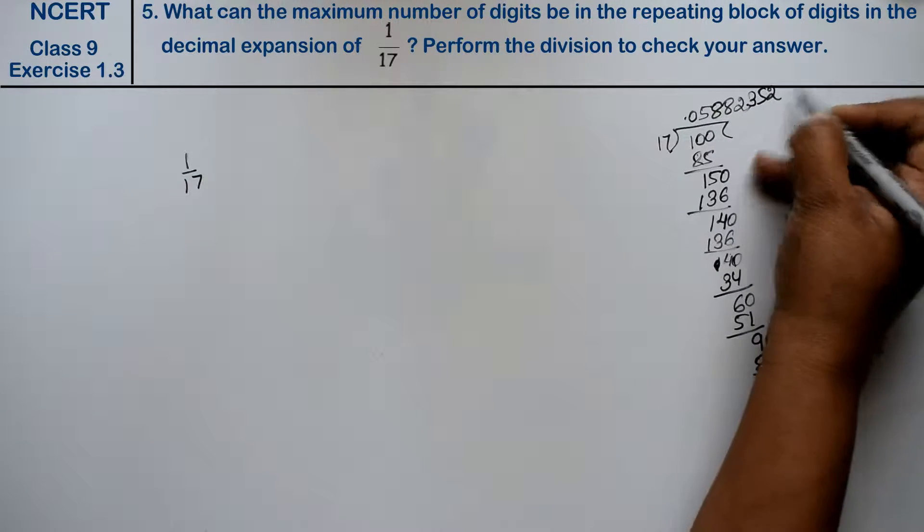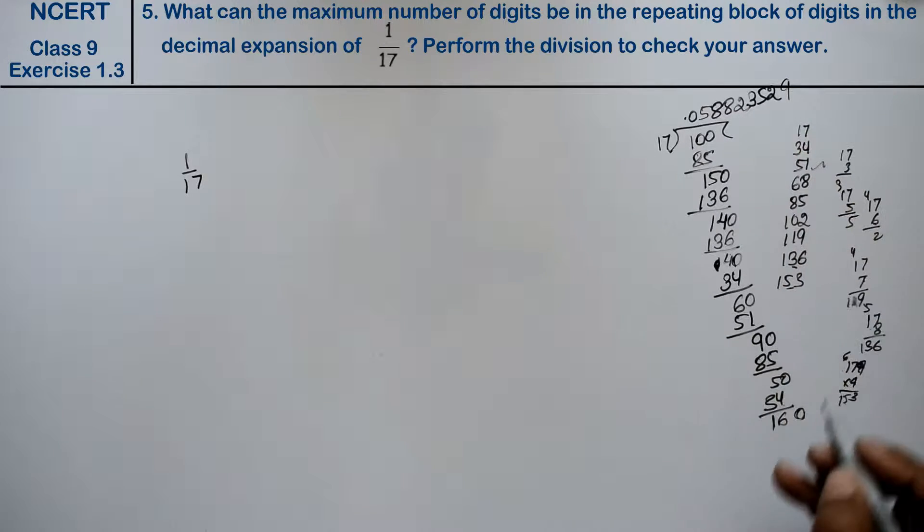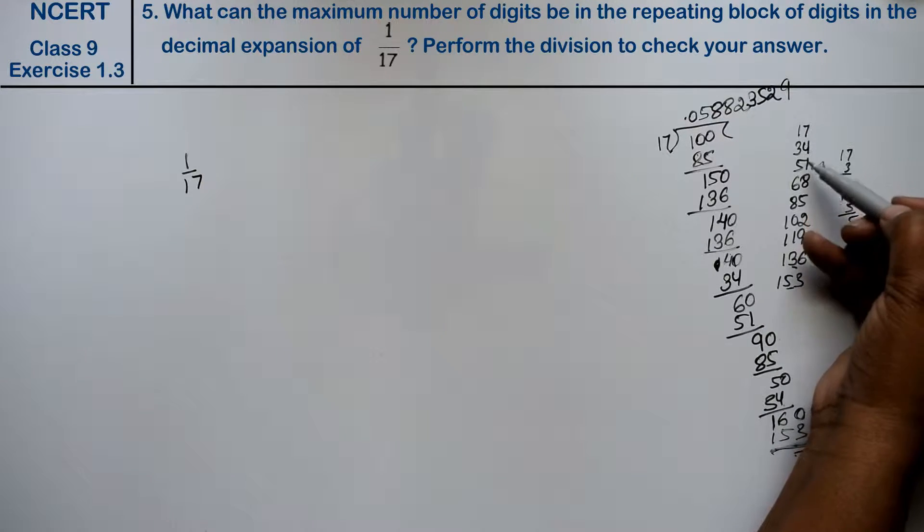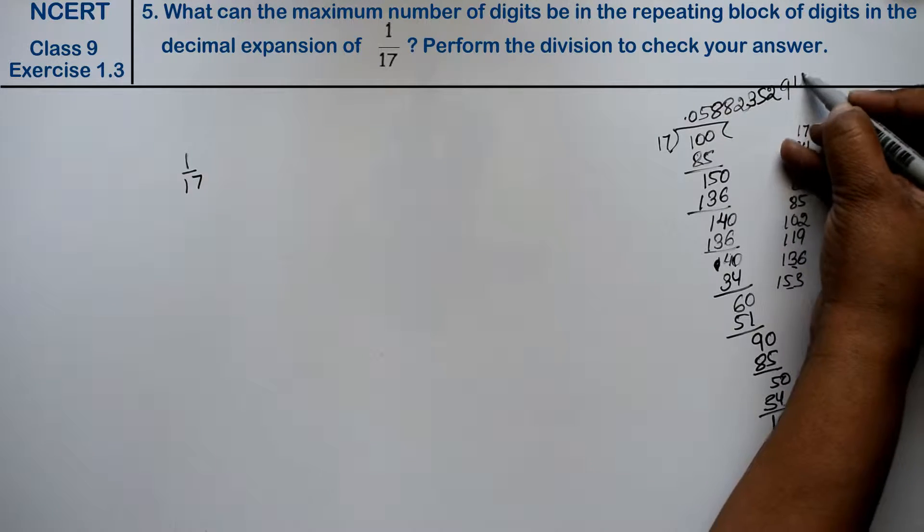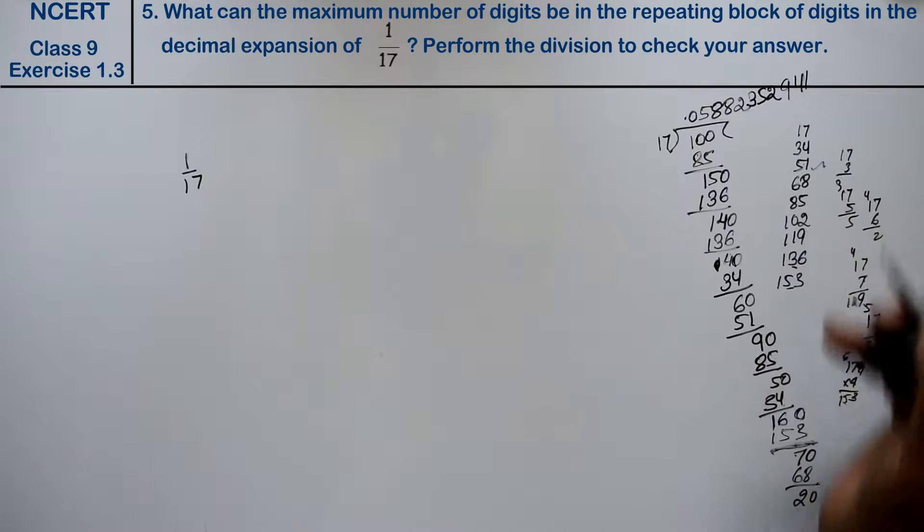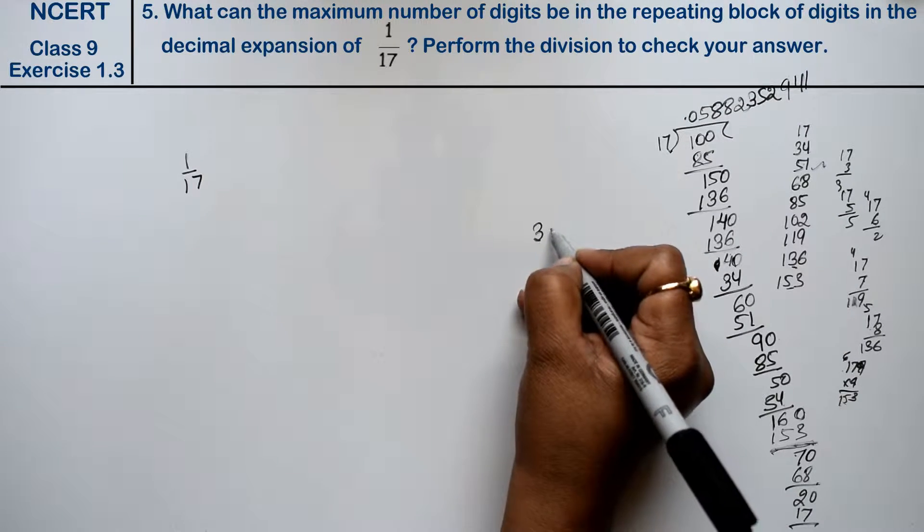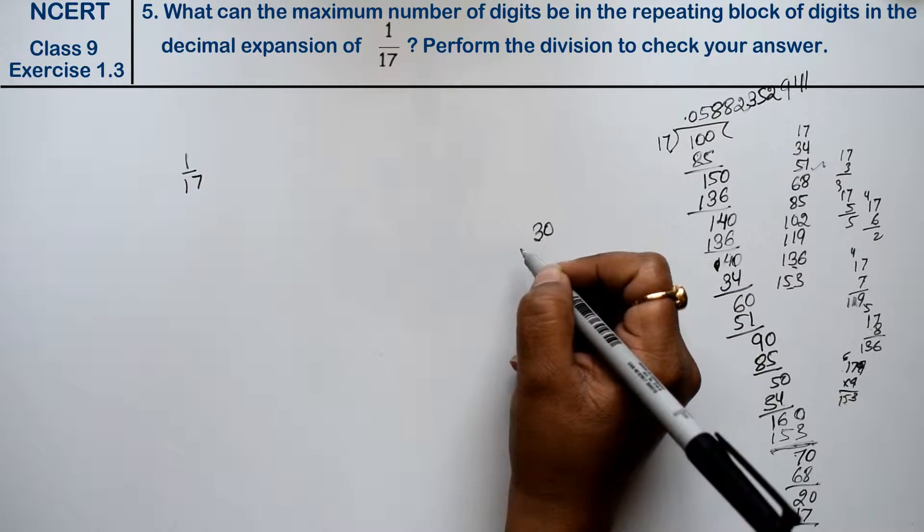Now 50, 2 goes in, 34 is subtracted, giving 160. Now 17×9 is 153. Right friends, so 7 goes in, leaving 70. Now from 123, 4 goes in, which is 68, leaving 30.